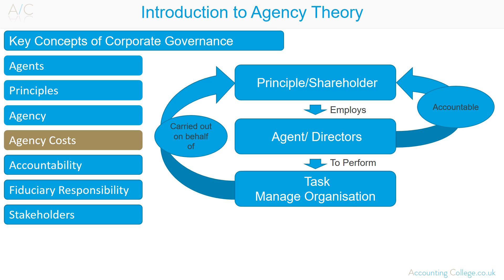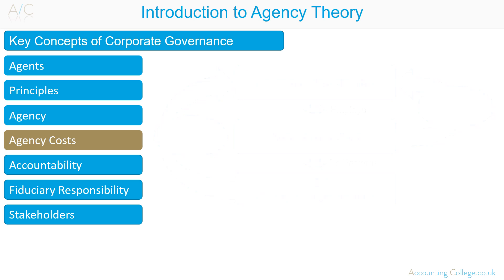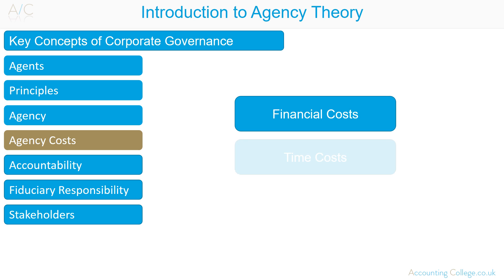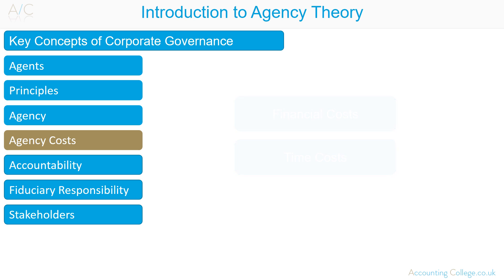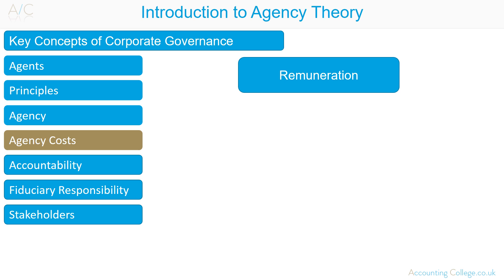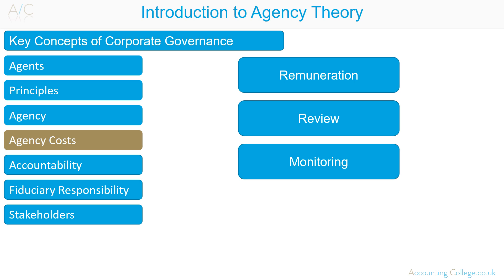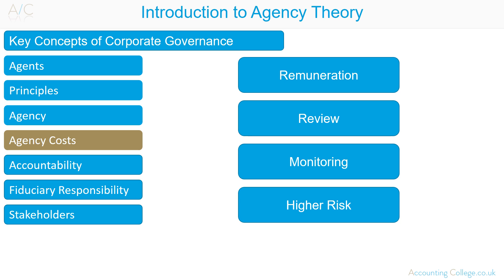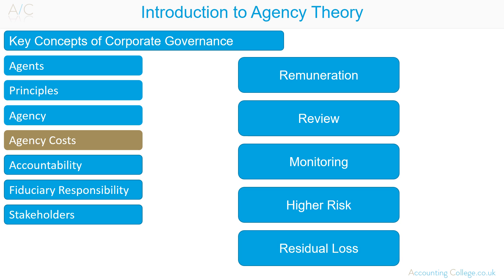Agency costs are costs incurred by the principal in monitoring an agent's behaviour. Costs can be incurred financially in terms of resources consumed or in time taken to monitor agents. Some examples of costs are: remuneration or incentive schemes offered to directors; the cost of producing and reviewing management reports for shareholders; audit costs used to monitor management's behaviour; and the cost of accepting higher risk than the shareholder would like with regards to the operating of the company by the directors.